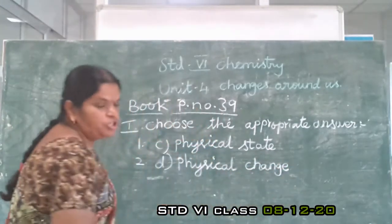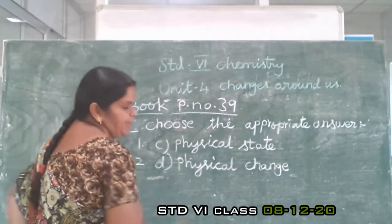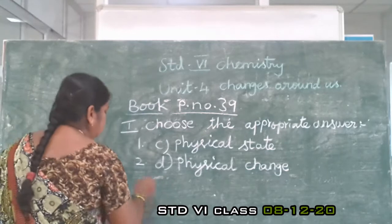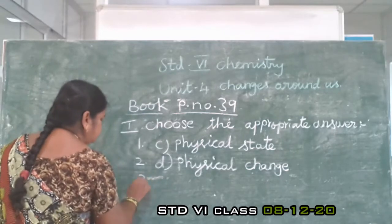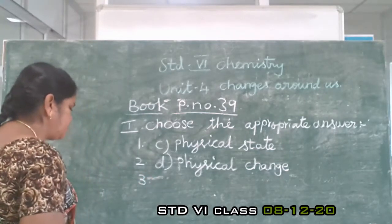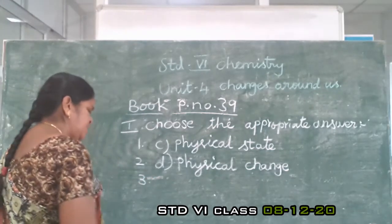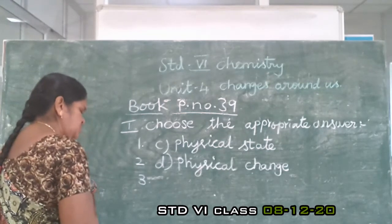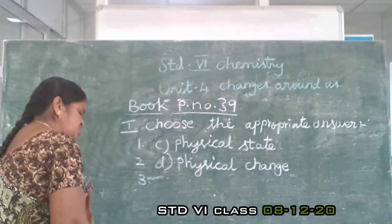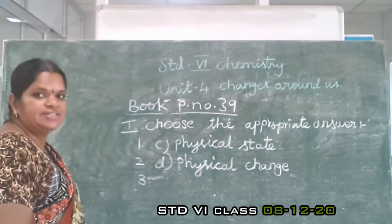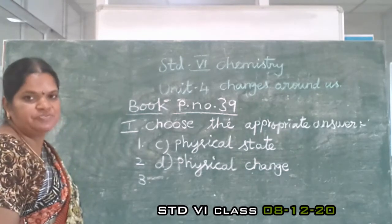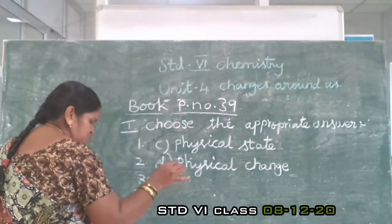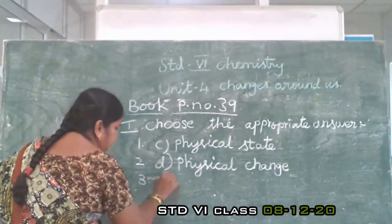Note down these answers in your book, page number 39. Third question: Formation of curd from milk is — a reversible change, a fast change, an irreversible change, or an undesirable change. Which one is correct? That is an irreversible change — option C.